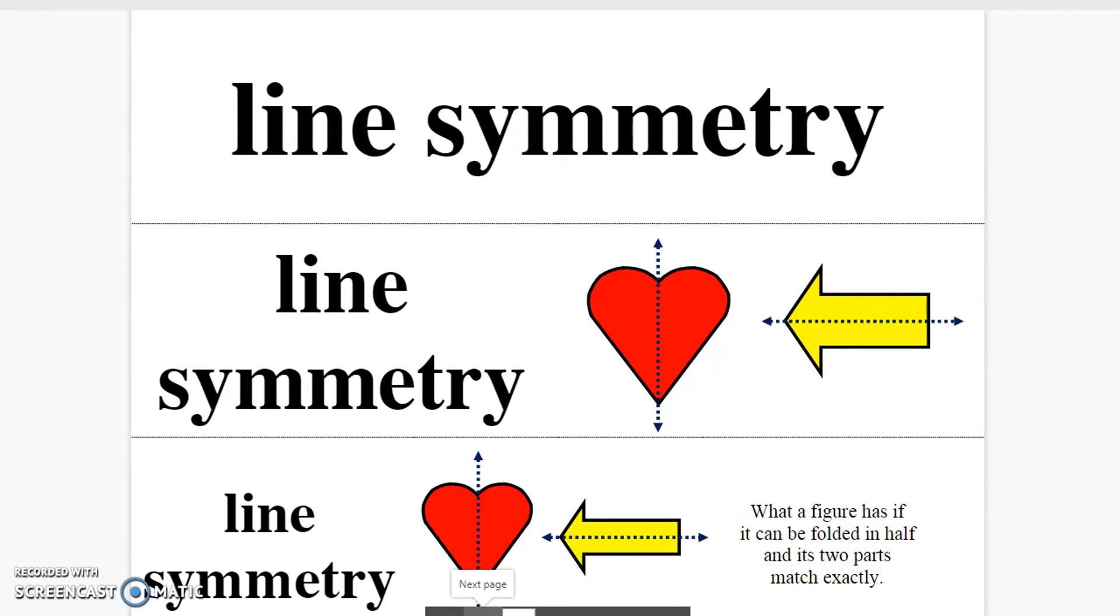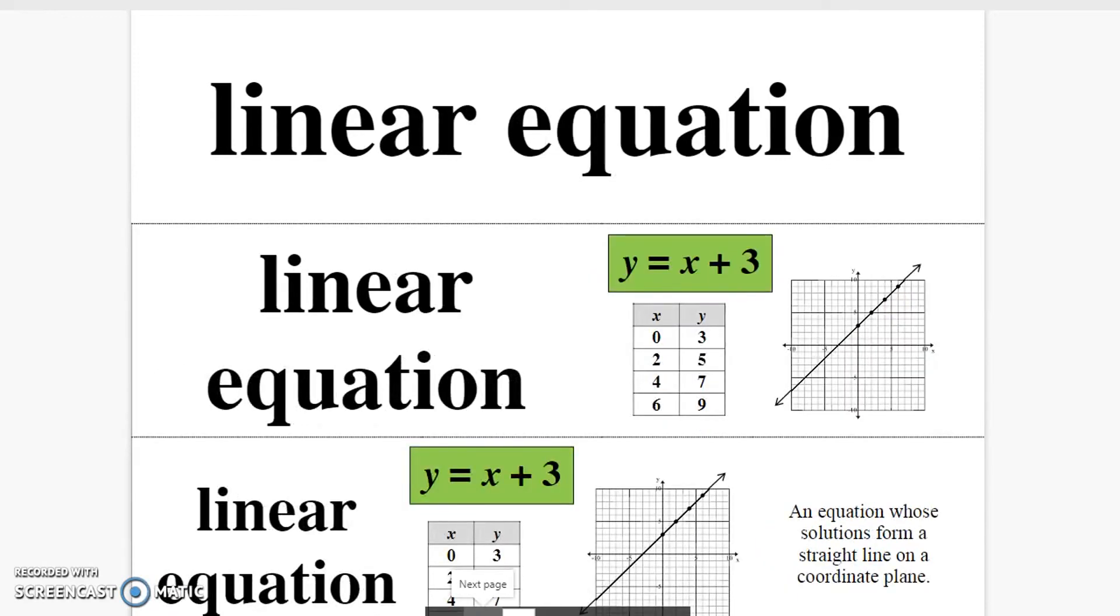Line of symmetry. What a figure has if it can be folded in half and its two parts match exactly. Linear equation. An equation whose solutions form a straight line on a coordinate plane.